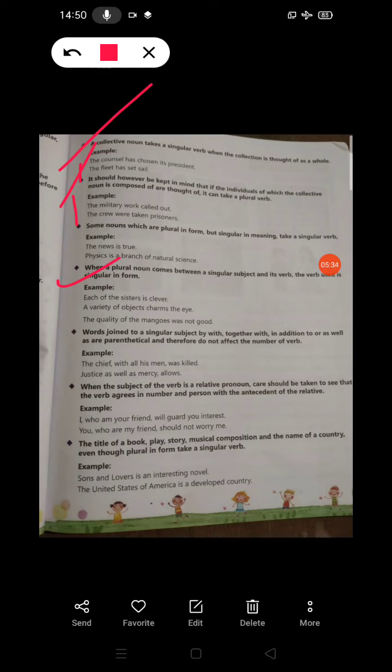For example, each of the sisters is clever. A variety of objects charms the eye. The quality of the mangoes was not good.